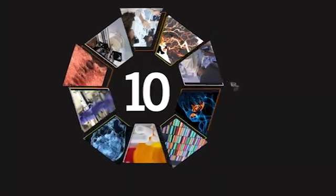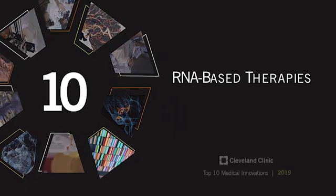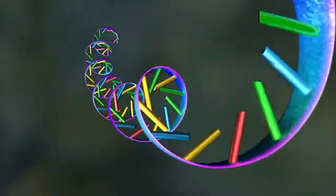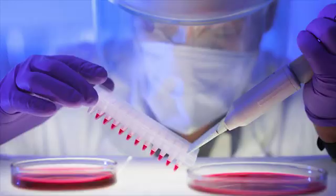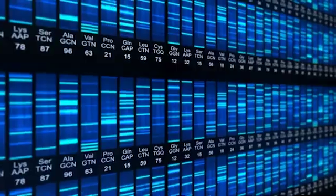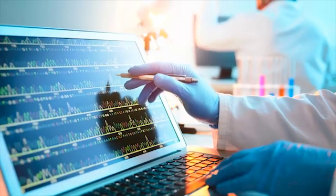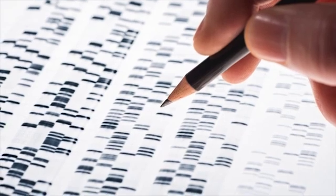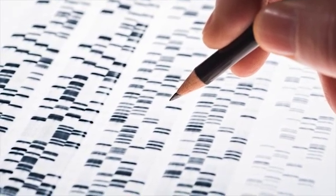Number 10: RNA-based therapies. A code of genetic information, ribonucleic acid has become a popular target for therapeutics. Interfering with that code gives scientists the ability to intercept a patient's genetic abnormality before it is translated into non-functioning proteins.